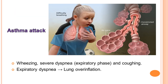Next is the terminology about an asthma attack. An asthma attack is characterized by wheezing, severe dyspnea especially in the expiratory phase, and coughing. Expiratory dyspnea will cause lung overinflation. Một cơn hen suyễn sẽ được đặc trưng bởi thở khò khè, khó thở nặng đặc biệt trong thì thở ra và ho. Khó thở thì thở ra sẽ gây ra hiện tượng căng giãn phổi.